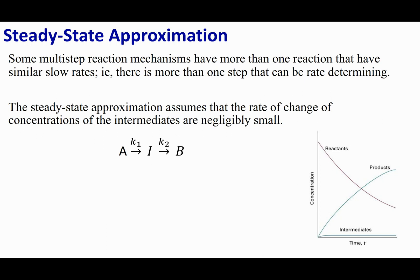Well, then what you can say, or what can happen, is that there is going to be more than one rate determining step. And the question is, how do we go ahead and propose mechanisms for this? And how do we write rate laws based on this idea that multiple steps are a slow step, or there is no one rate determining step? So what we're going to invoke is called the steady state approximation.